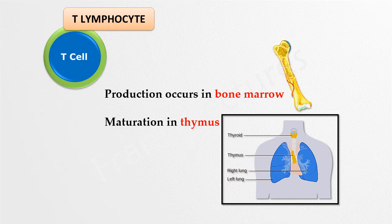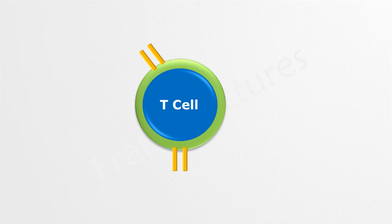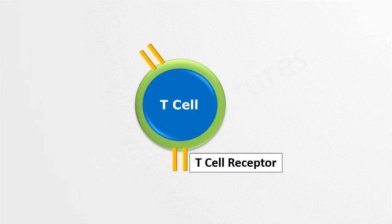When T-cells encounter antigens, they recognize those antigens by T-cell receptors, which further activate the adaptive immune response. In this video lecture, we will study T-cell receptors and CD3, which is a signaling protein associated with the T-cell receptor.